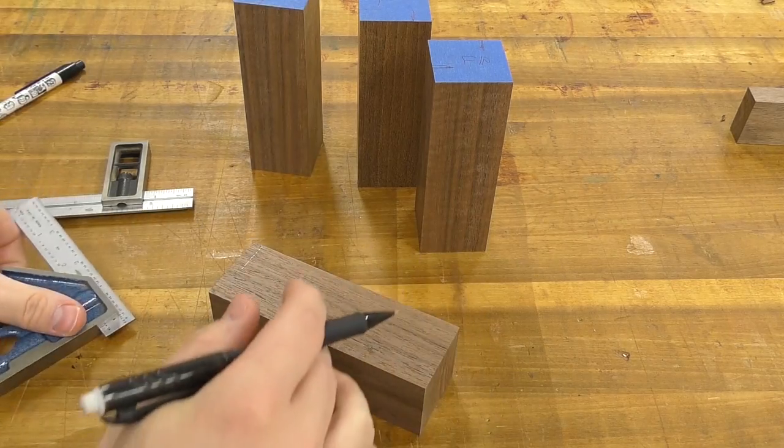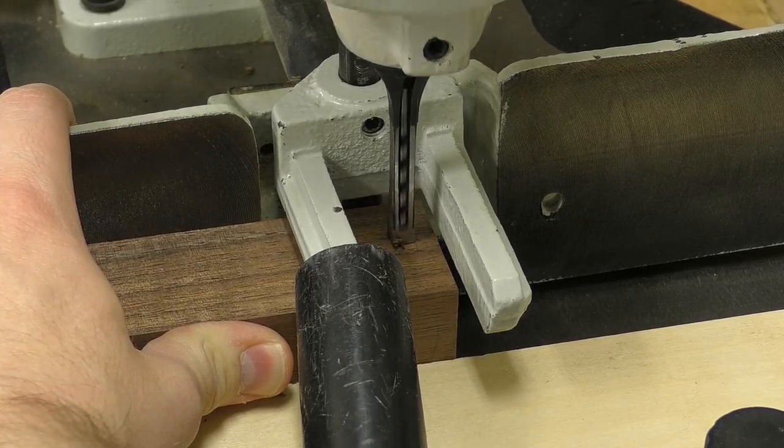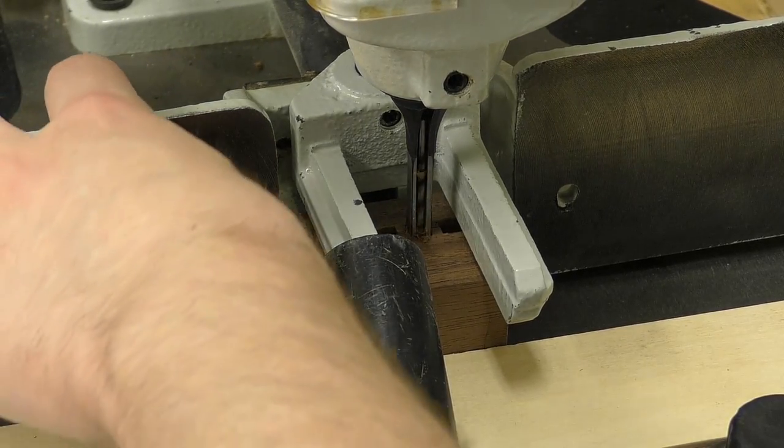So moving on to the feet. I begin by marking the start and the stop lines for the mortises. To cut the mortises, I'm using a quarter inch bit in my hollow chisel mortiser and I have the fence set back about half an inch.